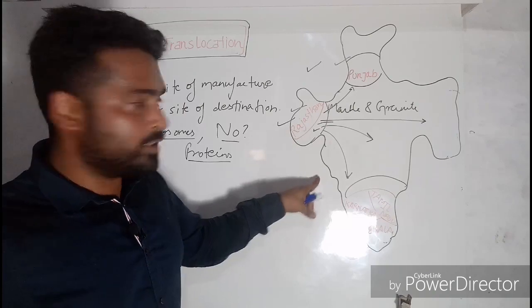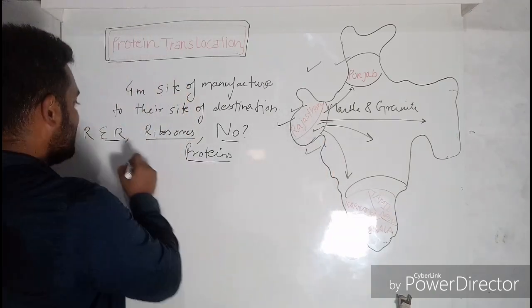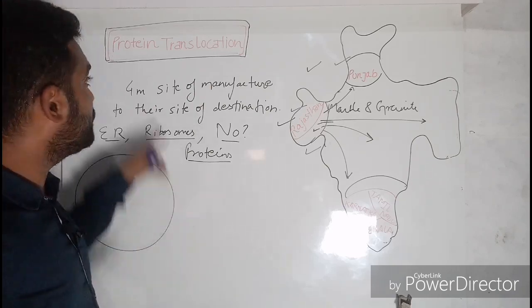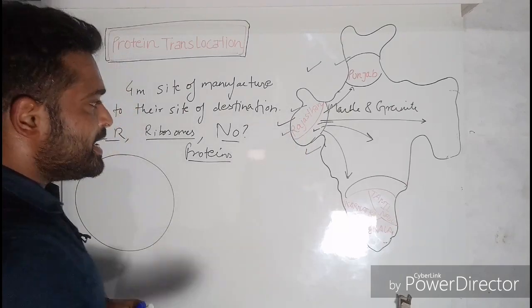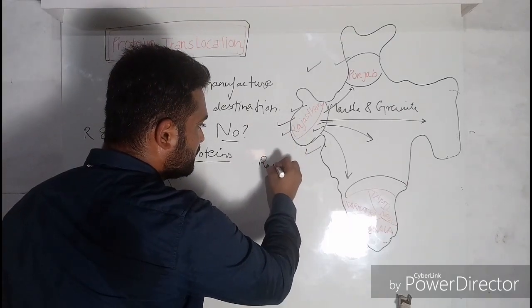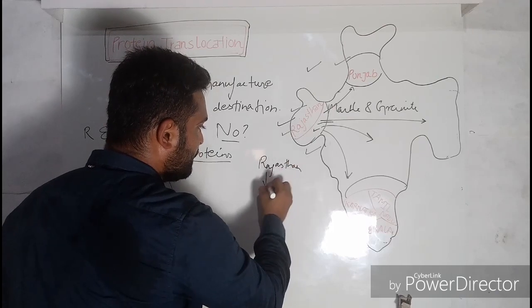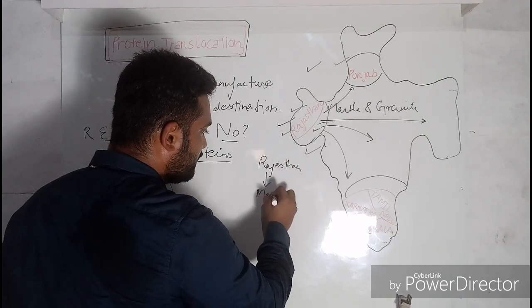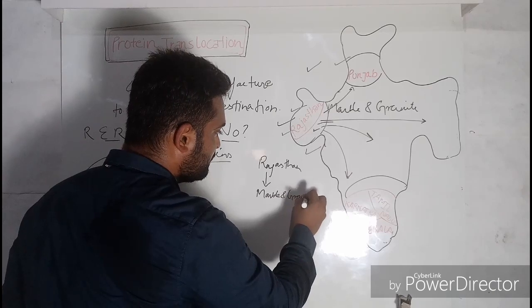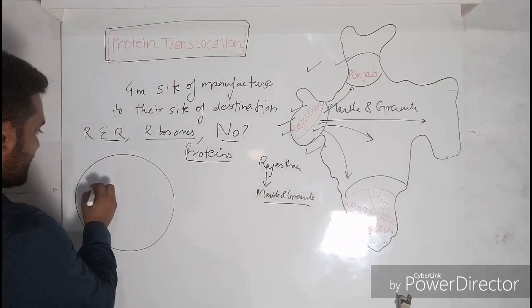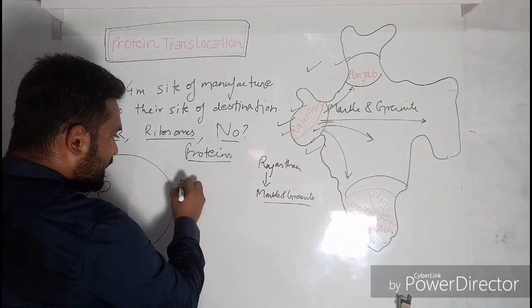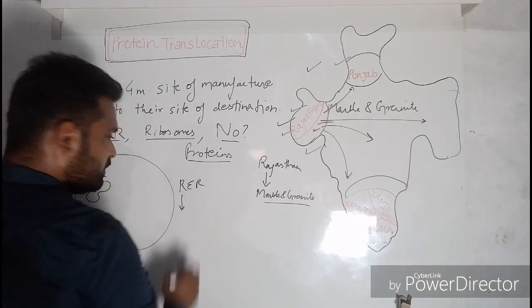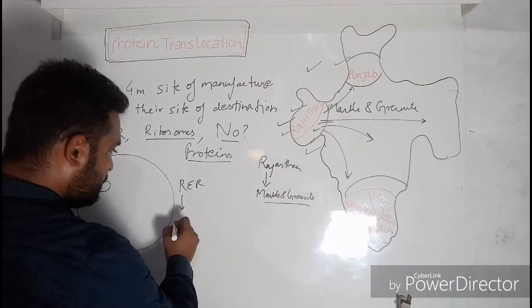Now we are going to compare this concept to the cellular process of protein translocation. We take the example of Rajasthan. Rajasthan is famous for marble and granite. Here is our endoplasmic reticulum which is containing ribosomes. So this RER is doing what it is meant for: protein synthesis.